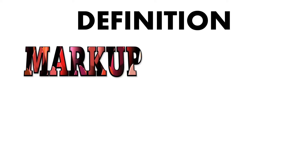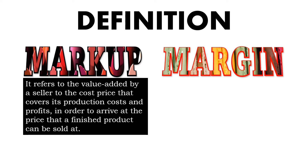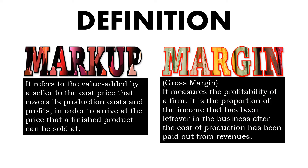Now let us define markup and margin. Markup refers to the value added by a seller to the cost price that covers its production costs and profits in order to arrive at a price that a finished product can be sold at. While margin, also called gross margin, measures the profitability of a firm. It is the proportion of income left over in the business after the cost of production has been paid out from revenues.